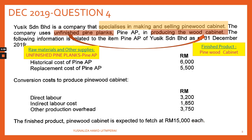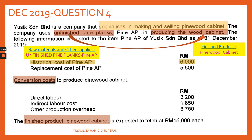The raw material and other supplies in this question is unfinished pine planks known as Pine AP, and the finished product is the pine wood cabinet. The historical cost of Pine AP is six thousand, and the replacement cost of Pine AP is five thousand five hundred. The conversion costs to produce the finished product — the pine wood cabinet — consist of direct labor cost three thousand two hundred, indirect labor cost one thousand eight hundred fifty, and other production overhead three thousand seven hundred fifty. These figures are per cabinet, not totals. The finished product pine wood cabinet is expected to sell at fifteen thousand each.